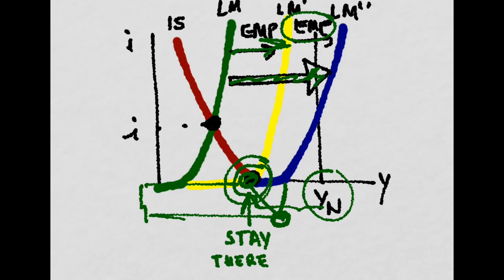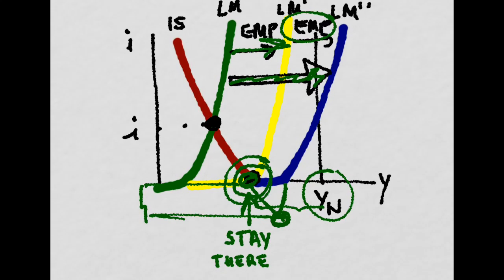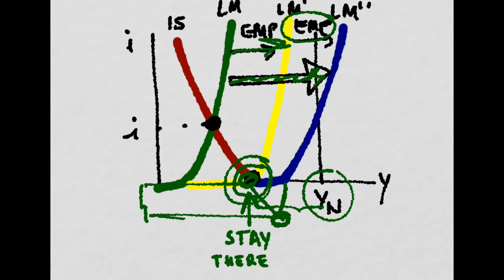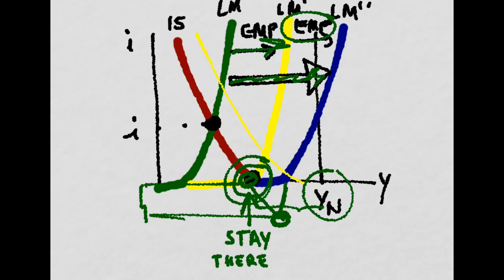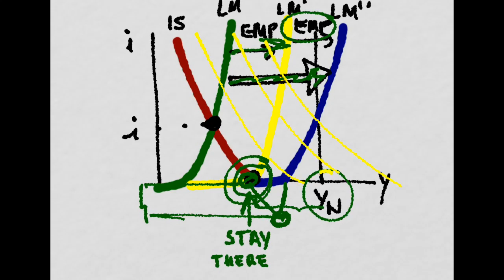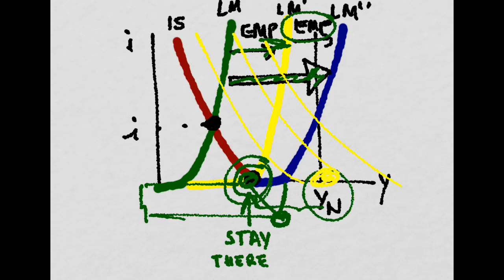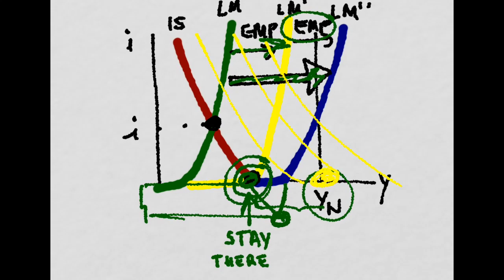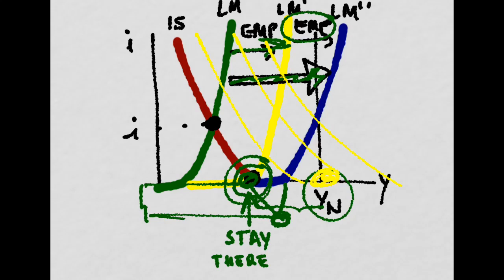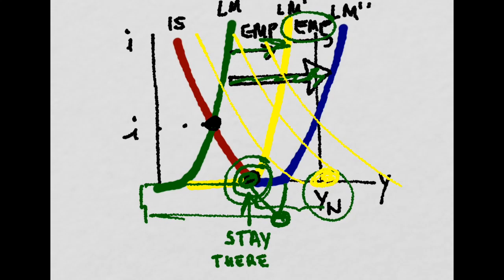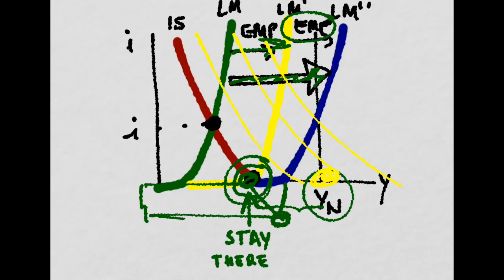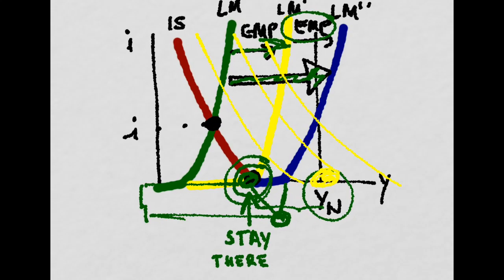So the only possibility would be to shift, of course, the IS to the right in order to meet potential output, but that would require increasing government expenditure, lowering taxes, which actually increases the deficit and is bad for your public debt.